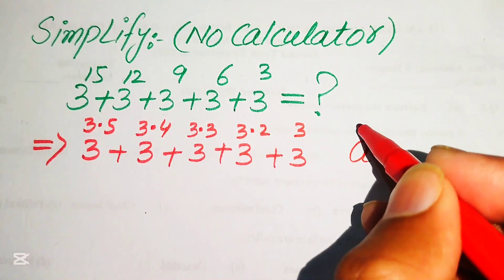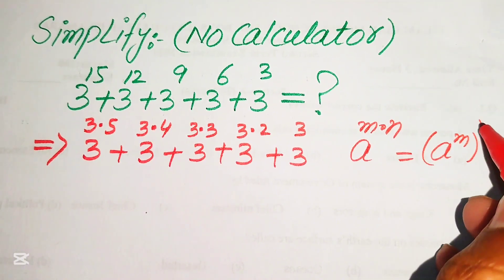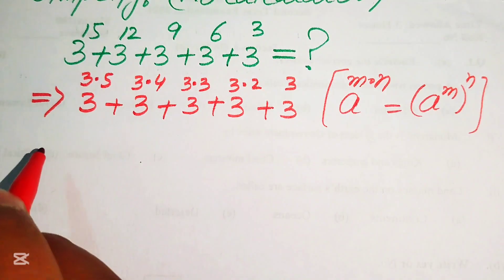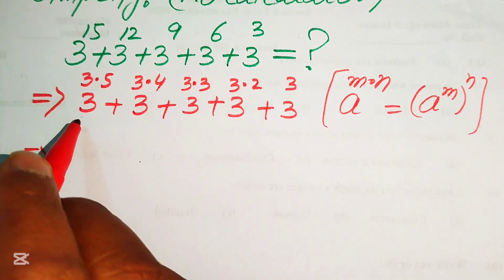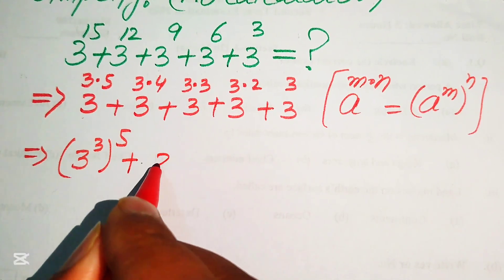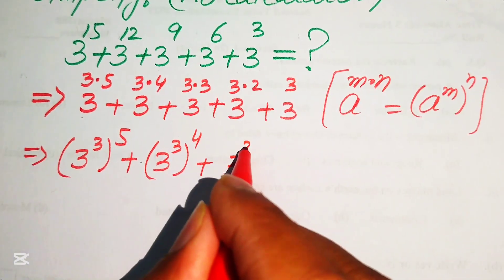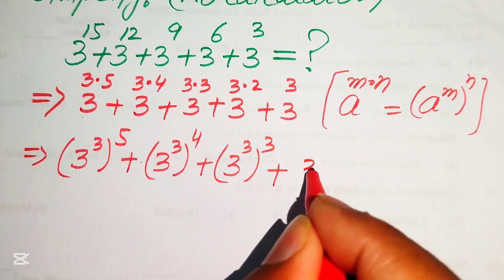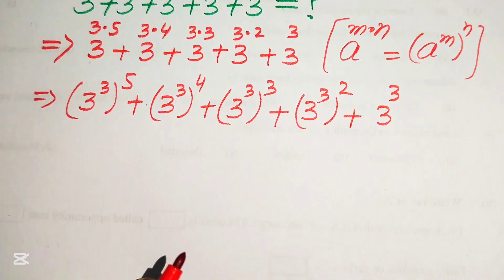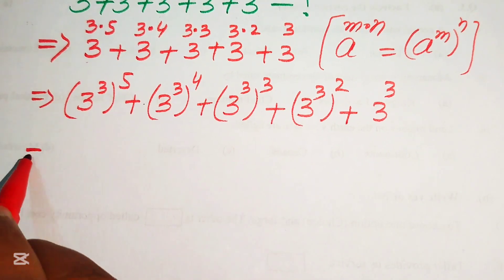Here we need to apply this nice exponential formula: if you have a to the power of m times n, it equals a to the power of m, to the power of n. According to this exponent law, we break all of these exponents and move the term 3 inside, so it will be written as 3 cubed to the power of 5, plus 3 cubed to the power of 4, plus 3 cubed to the power of 3, plus 3 cubed squared, plus 3 cubed. Each of these terms involves 3 cubed, and we know that 3 cubed equals 27.